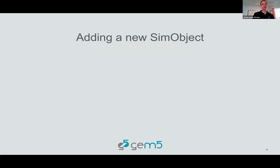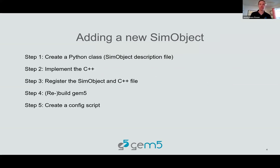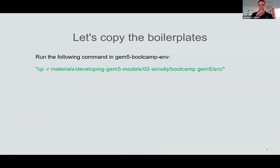Let's go through adding a new SimObject. There are a number of steps: we have to create a Python class which is our SimObject description file — this is what allows us to expose the SimObject from C++ to Python. We need to implement the object in C++, register the object and the C++ file in the build system, build GEM5, and then write a configuration script to actually use this object. While GEM5 is building in the background, let's do these things.